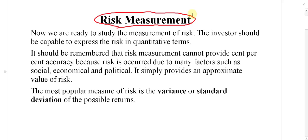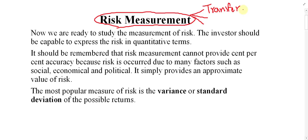For managing risk, there are a few tools and steps. Simply, we can divide them into three parts. Number one is transferring the risk. One way of managing risk is transferring it — for example, when I feel there is a risk against my asset, I may take an insurance policy. Or if I feel the exchange rate may increase or decrease, I may go for a futures contract, options contract, forward contract, or swap.